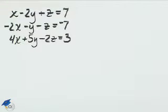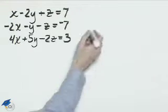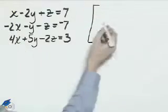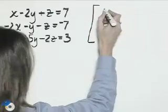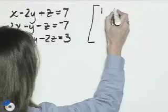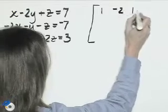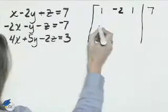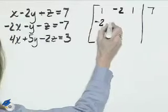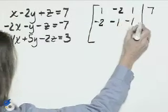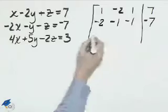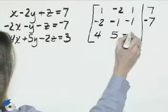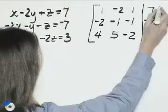Solve this 3 by 3 system with matrices. The first matrix will just consist of the coefficients of each of these. We'll have 1, negative 2, 1, and 7. Negative 2, negative 1, negative 1, negative 7. 4, 5, negative 2, and 3.